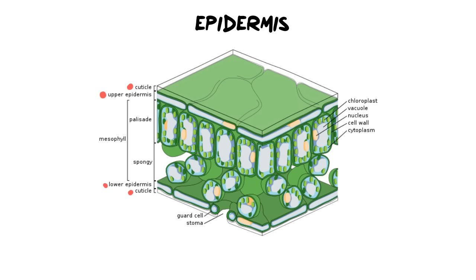The point of any epidermis is protection — we're trying to protect everything that is below it. We also want to make sure that all the tissues sitting underneath it, in the mesophyll region, can do their job. So the point of specialized epidermal cells comes into play here. The epidermis and what is near it or on it help it do its job.